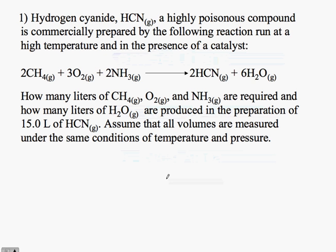Assume that all the volumes are measured under the same conditions of temperature and pressure. The key to this problem is we need to use the stoichiometry given in the balanced chemical equation. We know what we're given — the 15 liters of hydrogen cyanide — and we can use that information to deduce what all the other reagents should be.